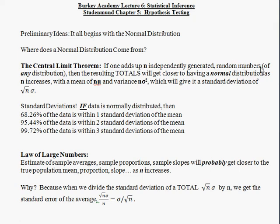In the last lecture we looked at trying to get a feel for what a normal distribution is and where it comes from. A normal distribution is described by two things: its mean, its average, and a standard deviation, which is a common distance that the items you're describing are away from the average. If you go one of those common distances above and below the average, you capture 68.26% of whatever it is you're describing — it could be data or totals of numbers, as we saw last time.